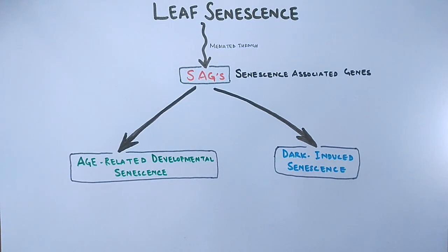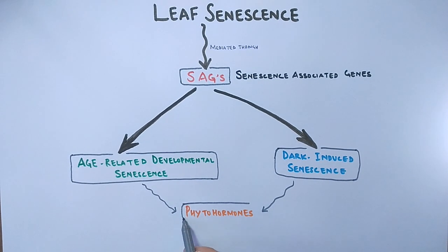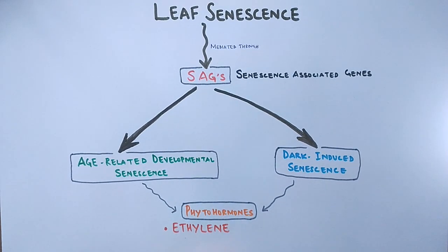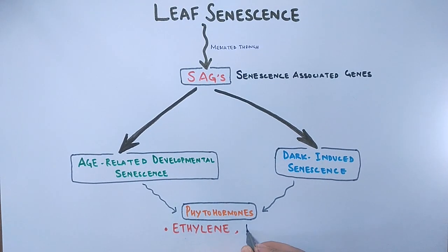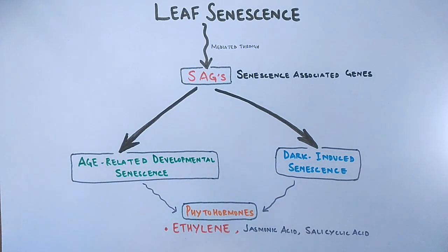The age-related developmental senescence is mostly profound in plants, and both of these leaf senescence processes are initiated by phytohormones. It is mostly the ethylene hormone which mediates the leaf senescence, but other hormones like jasmonic acid and salicylic acid also mediate the leaf senescence. But ethylene remains the primary phytohormone for leaf senescence in plants.